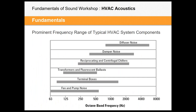When looking at HVAC system components, different products fall into different frequency ranges. In the higher frequency spectrum, you have things like diffusers and dampers that produce a hiss-type noise due to higher air velocity. As you move down in the spectrum to things like chillers, terminal units, fans, and pumps, the sound spectrum is drastically different — more of a low frequency rumble. This is useful when diagnosing sound issues: if you hear a hiss in a space, you can often narrow down the likely source by understanding that frequency range.